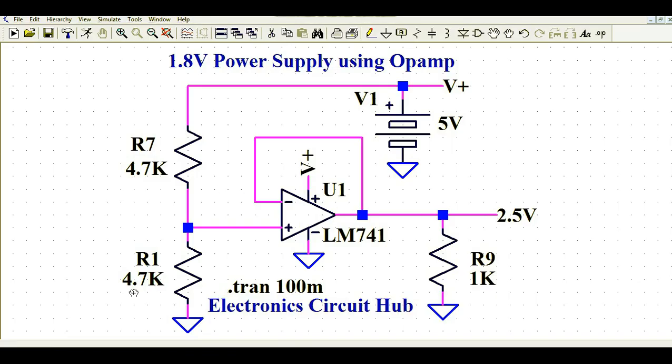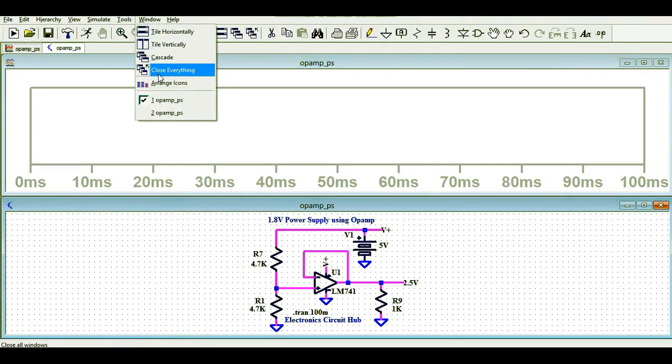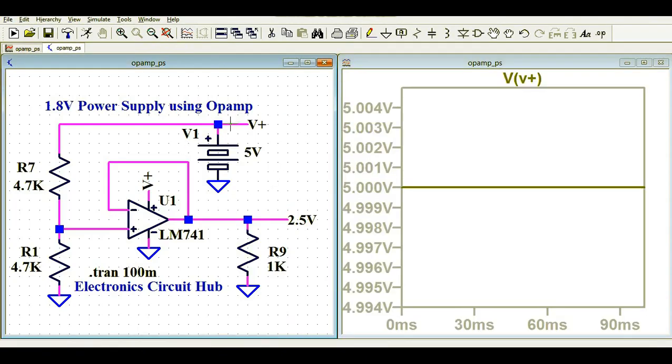Now you get 2.5 volt here, and as per your requirement you can change the value of R7 and R1 to get the required output voltage. Let me run the simulation and show you what is the output voltage. I'll tile the window vertically for now.